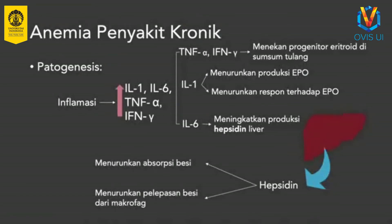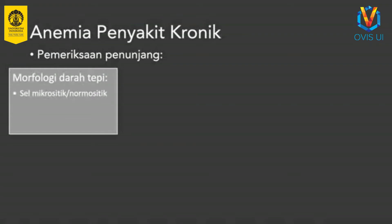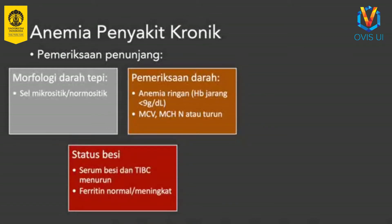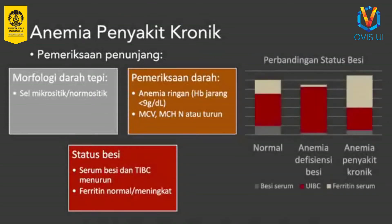Anemia penyakit kronik umumnya ringan, kadar Hb jarang kurang dari 9 gram per desiliter. Pemeriksaan status besi menunjukkan penurunan serum besi dan TIBC dengan serum ferritin normal atau meningkat. Berikut ini adalah perbandingan status besi antara anemia defisiensi besi dan anemia penyakit kronik.